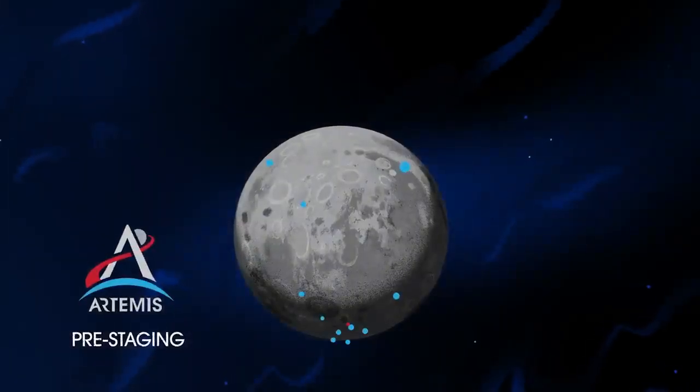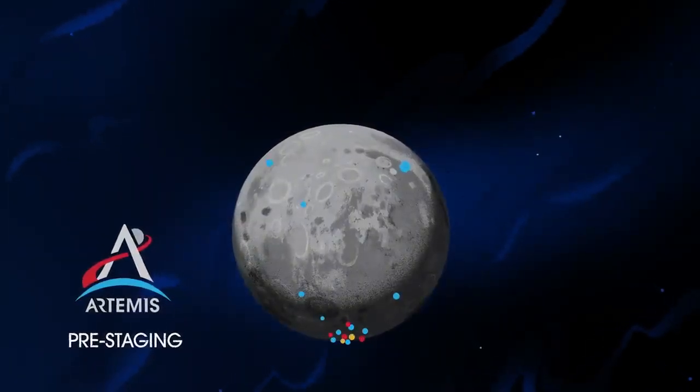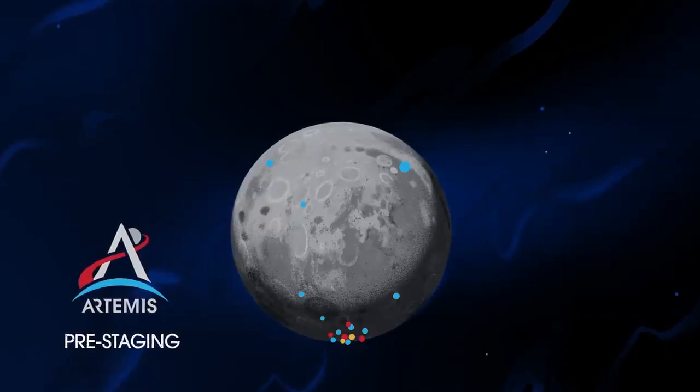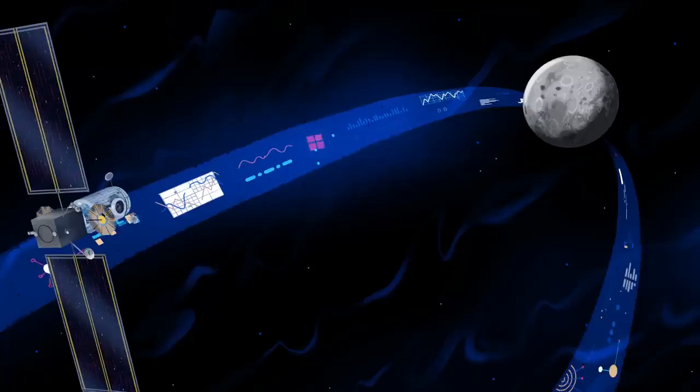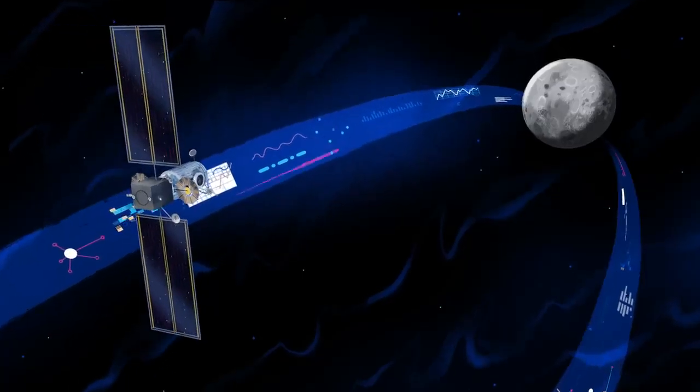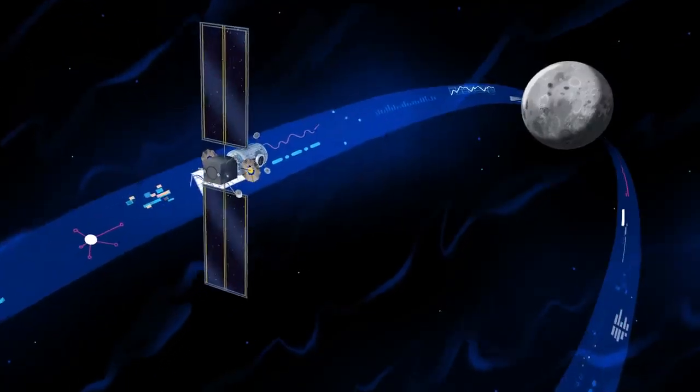Everything needed for lunar missions will be positioned in advance by commercial and international partners. This includes rovers, science experiments, and human-rated systems on the surface. But it also includes a dedicated lunar station in orbit around the Moon called Gateway.